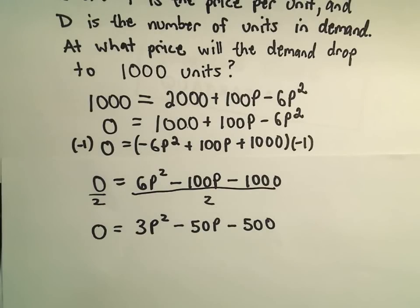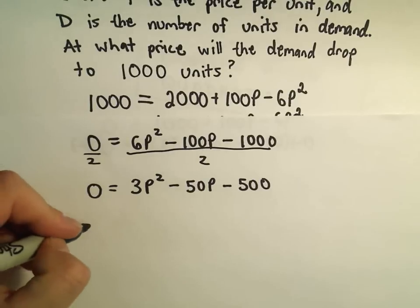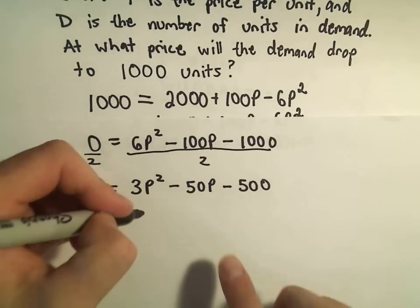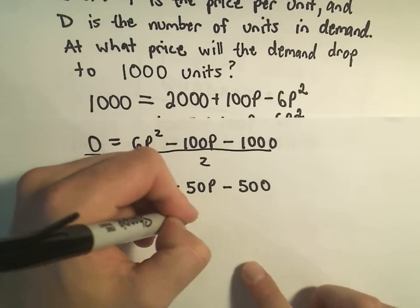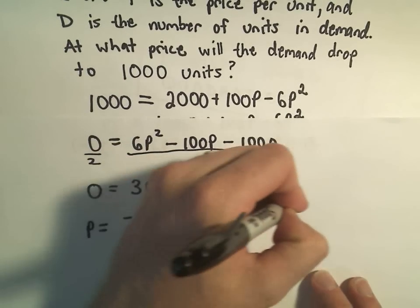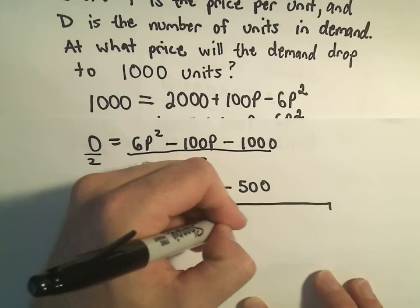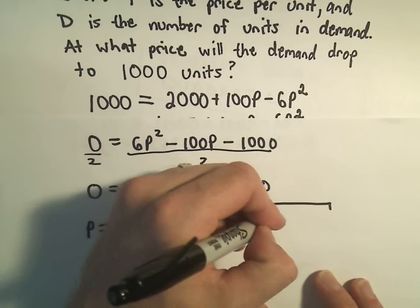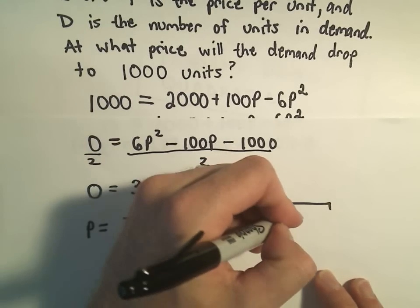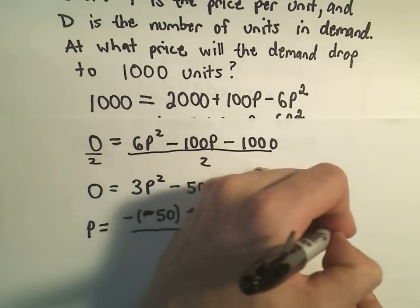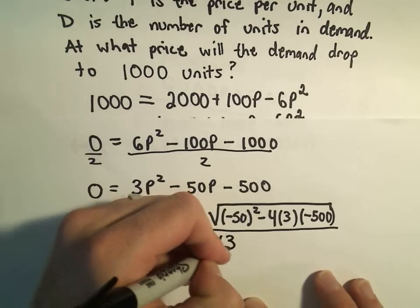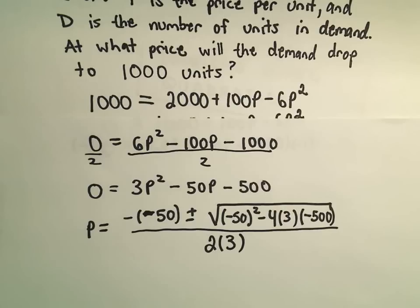So now I'm just going to use the quadratic formula. It says the price would be negative B, which is the negative of negative 50, plus or minus the square root of B squared minus 4 times A times C. And that's all divided by 2 times the A value, which is 3.